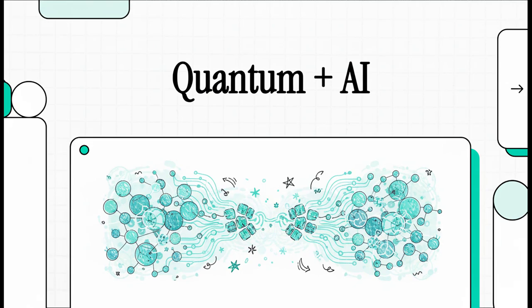Alright, quantum computing and generative AI. You hear these terms everywhere, right? And yeah, on their own, they're already total game changers. But what happens when you smash them together? Is this the next big tech revolution we've all been waiting for? Or is the hype just getting a little out of control? Well, that's what we're here to figure out.